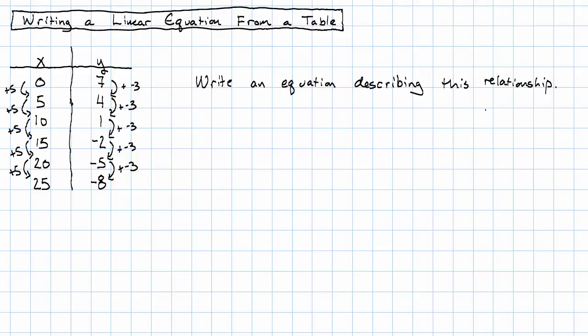Let's say we want to write an equation describing this relationship. Well, we know we can write this in the form y equals mx plus b, where m is the ratio change in y to change in x. In this example, the change in y is negative 3 and the change in x is 5.